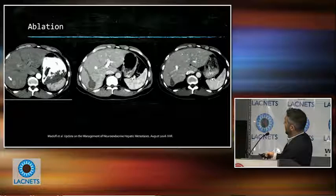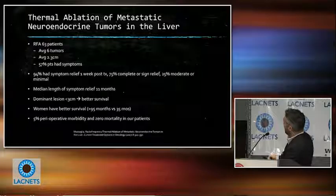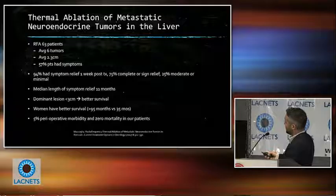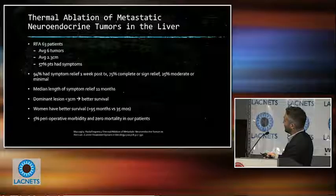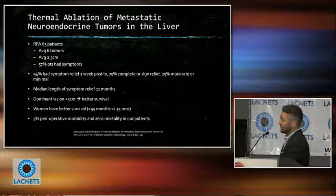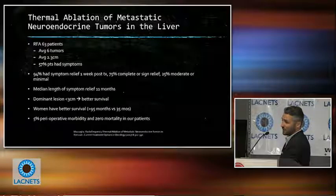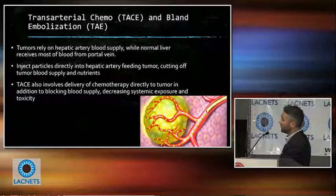Here is a picture of ablation. You can see a hypervascular tumor in the liver, and post-ablation this dark area is the ablation zone with the ablation track visible. In follow-up, the ablation zone has shrunk over time with no residual tumor. There are many studies on thermal ablation. A 2007 study of 63 patients with an average of six tumors at 2.3 centimeters found that 94% had symptom relief at one week, 75% had complete or significant relief, and the median length of symptom relief was 11 months. Smaller lesions led to better survival, and perioperative mortality was low with no reported deaths.